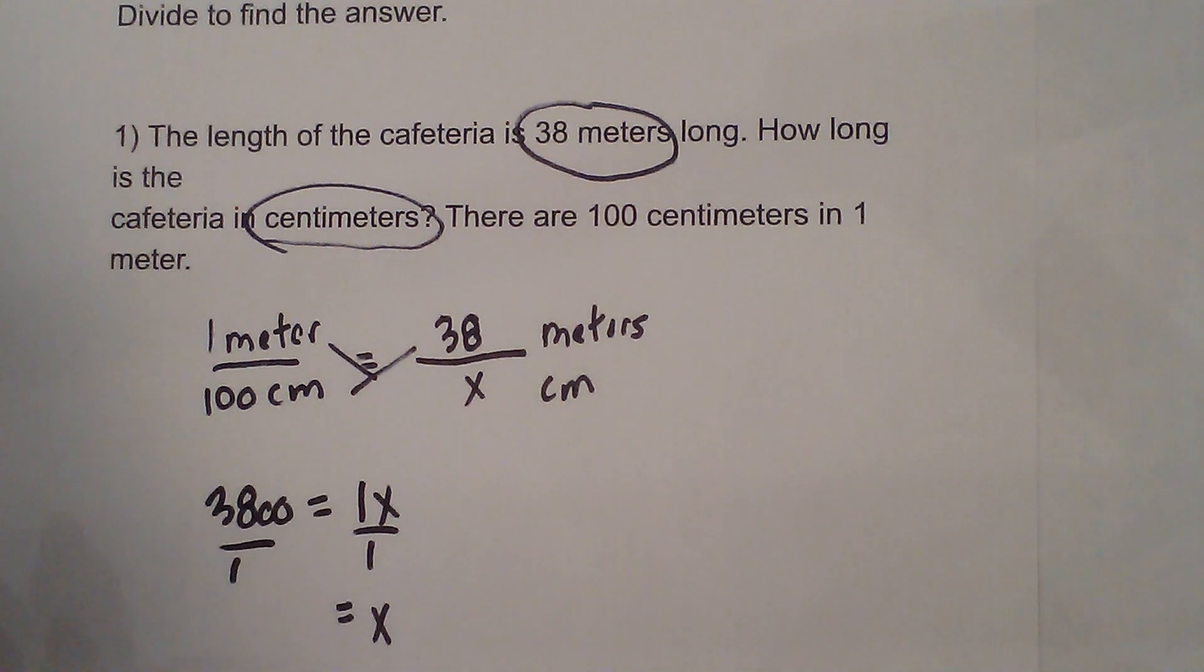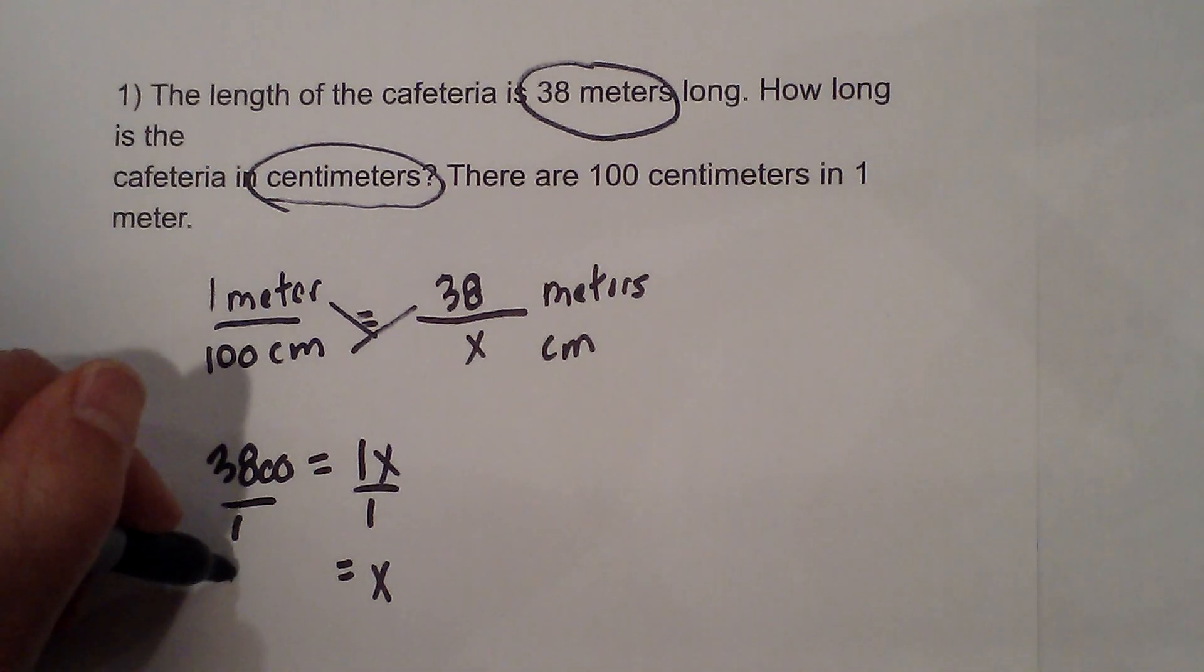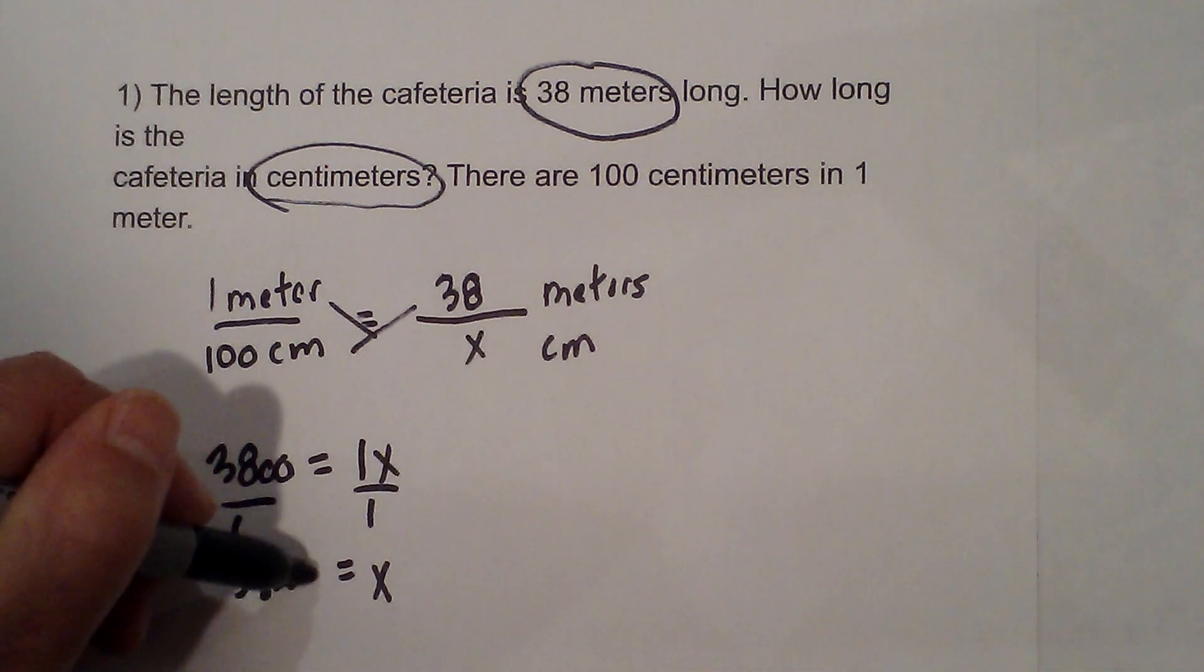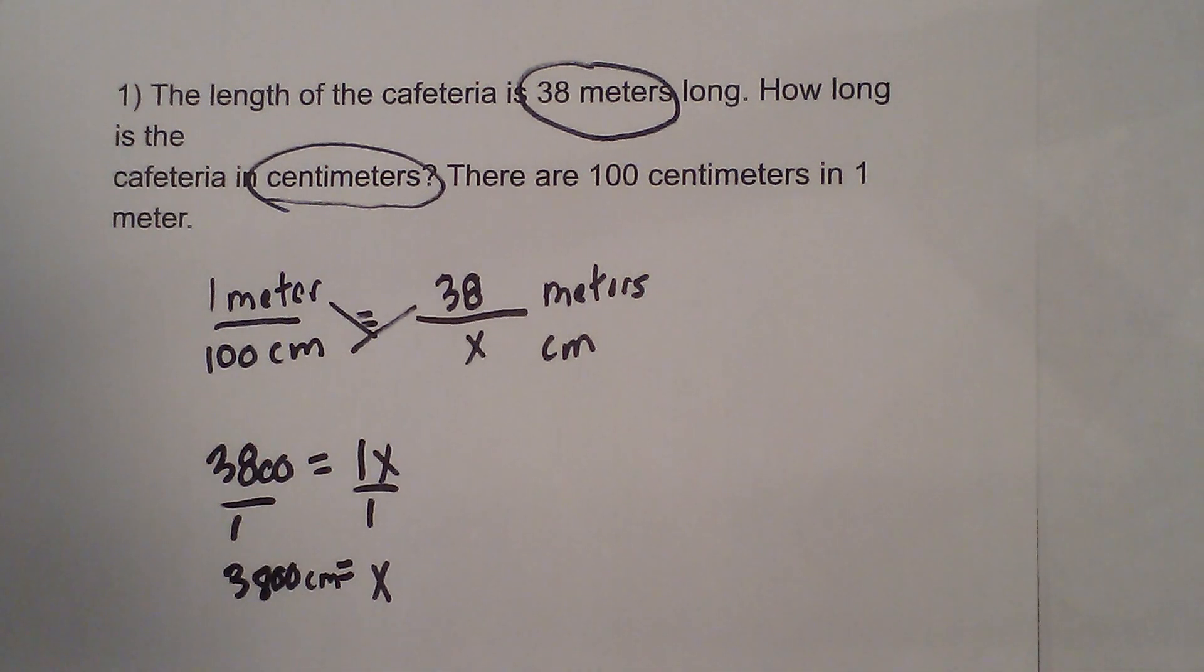So x is equal to 3800. And what's my unit of measure? That is centimeters. 3800 centimeters. Now let's work another example here.